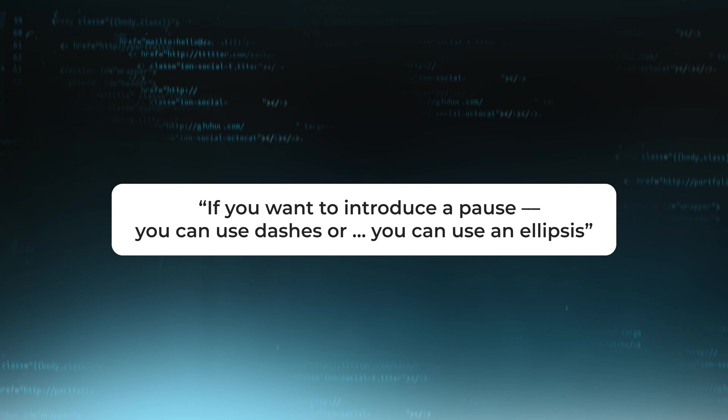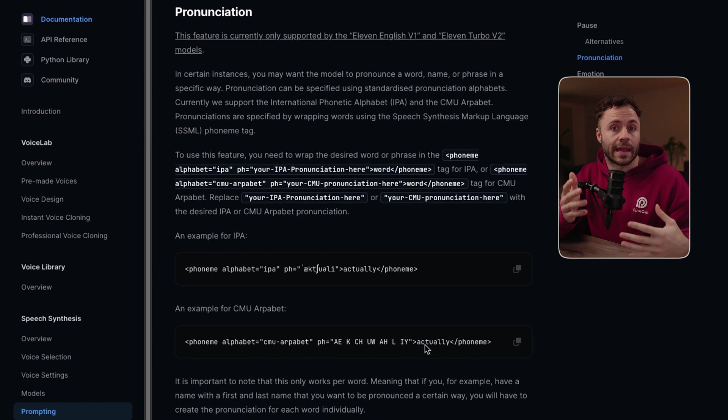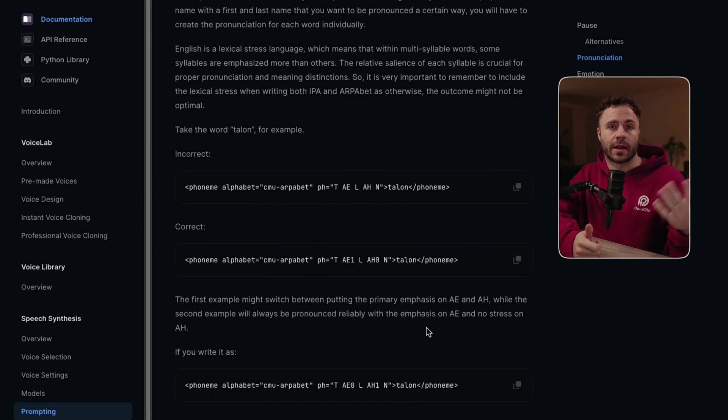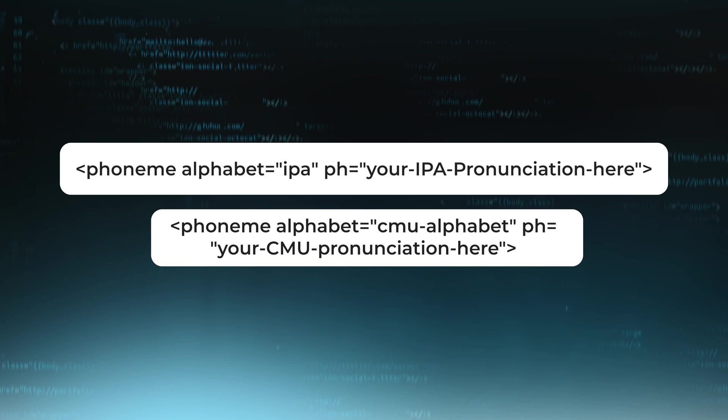Another couple of options to explore is using a dash or multiple dashes or an ellipsis. An example of using both in one sentence is: 'If you want to introduce a pause you can use dashes or you can use an ellipsis.' Next up is pronunciation — in certain instances you may want the model to pronounce a word, name, or phrase in a specific way. Pronunciation can be specified using the standardized pronunciation alphabet, either IPA or CMU, and to do this you're just going to wrap the word in the syntax. I don't think this is going to be super relevant to 99% of people but I thought I'd put the option there in case you need it.